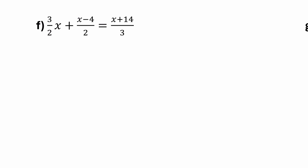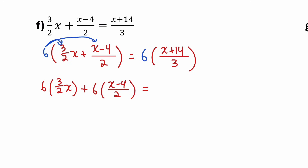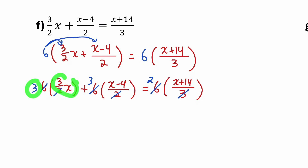On the left, both terms inside the brackets have to be multiplied by 6 — I have to do 6 times the first term plus 6 times the second term. Now all the fractions should simplify. I have 6 divided by 2, which is 3; another 6 divided by 2, which is 3; and on the right, 6 divided by 3, which is 2. So I have 3 times 3x — that's 9x — plus 3 times x minus 4, equals 2 times x plus 14.